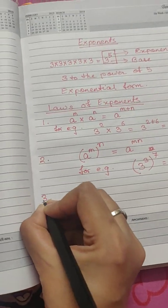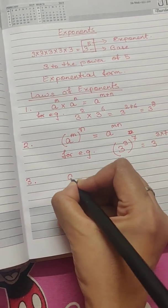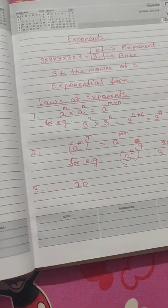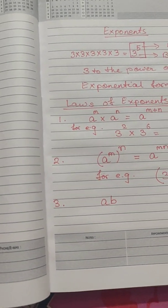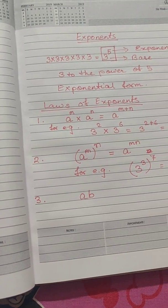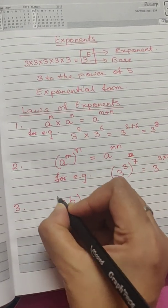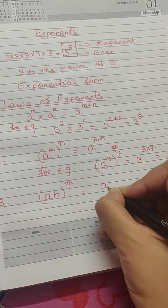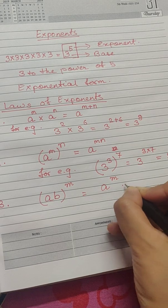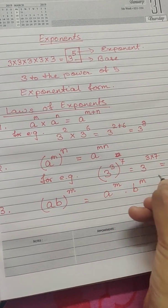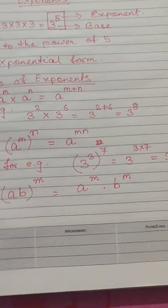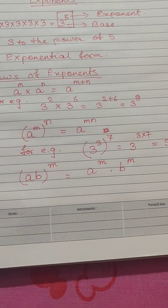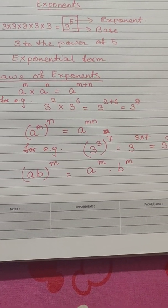Now, the third law states that what if there is another number in the base. Along with a, there is another number in the base and it is raised to the power of m. In this case, we can write it like this: a to the power of m into b to the power of m. So, ab to the power of m can be written as a to the power of m into b to the power of m.